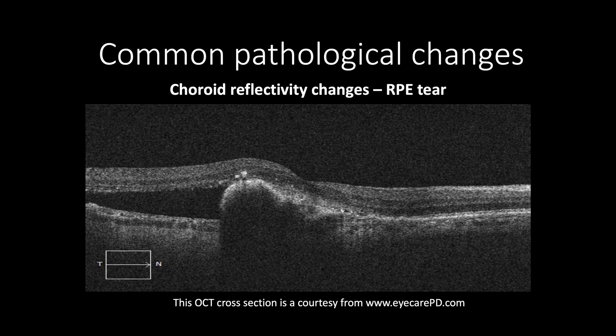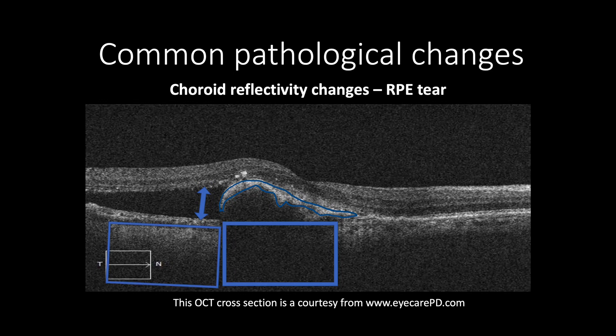However, contraction of RPE in cases of RPE tear, which appears as increased reflectivity causing indentation of the retina, may cause hyporeflectivity of the choroid due to shadow artifact, and increased reflectivity of the adjacent area of the choroid due to absence of RPE in the area where RPE was ripped off.